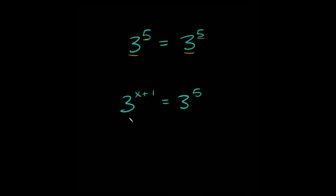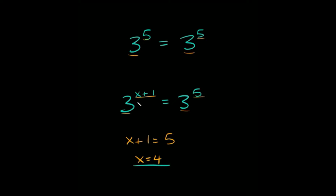So let's jump down here. You can see the bases are the same — we have a 3 here and a 3 here. So if we want to figure out what x should be equal to, we just set the exponents equal to each other. We're going to say x plus 1 is equal to 5, so x would be equal to 4. As you can see, when you have the same bases, all you have to do is set whatever's in the exponent equal to the exponent on the other side.